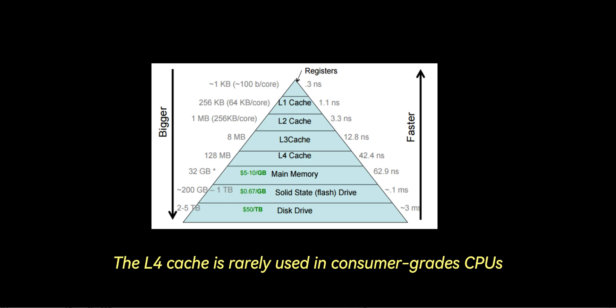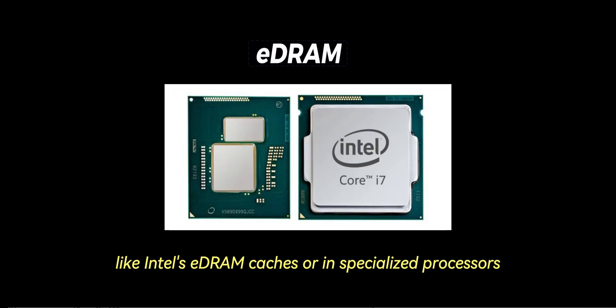The L4 cache is rarely used in consumer-grade CPUs, but present in some high-performance systems like Intel's Edram caches or in specialized processors. It's slower than L3, but faster than main memory.